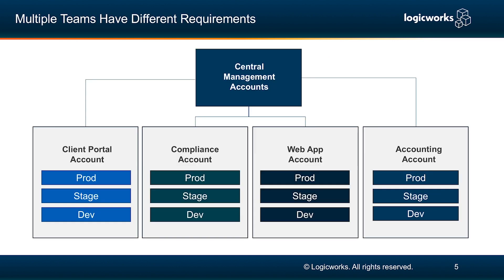So how do we manage that? For that, we'd have a multiple-account structure where you have a centralized management account, and then under that account we have different accounts for each team or each environment. In these accounts, you can have a different tier for your production, tier for your stage, or a tier for your dev. Everything is nice and neatly separated and you don't have to worry about commingling of information.